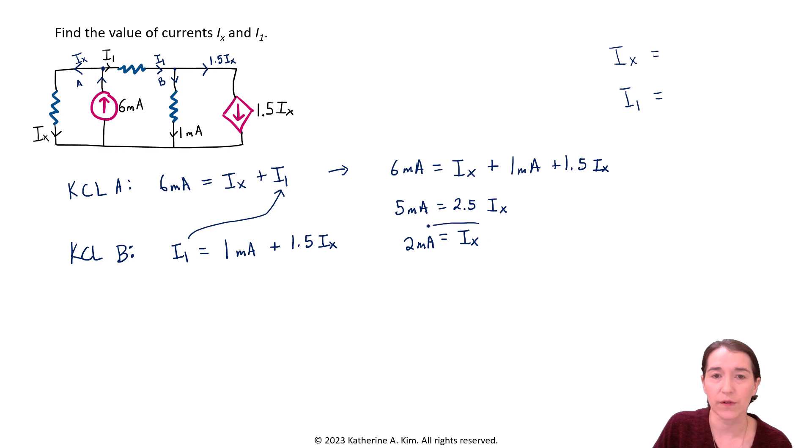All right, so actually, we have found our first one. So we can move that on up here. I'm going to go ahead and write it up here, 2 milliamps, because we have solved that. Okay, now what do we do? Well, we're solving for two variables. We know our first variable. We can now put this one back into here and solve there. So let's write that out.